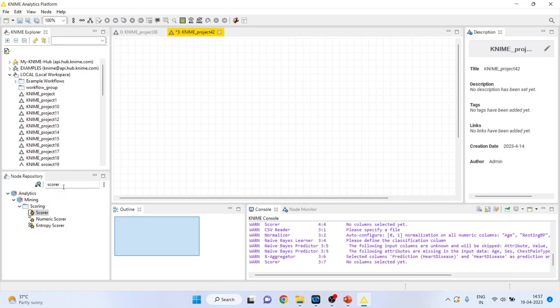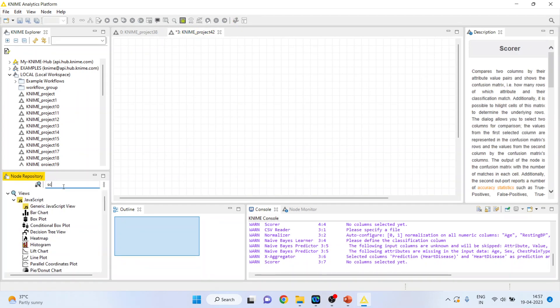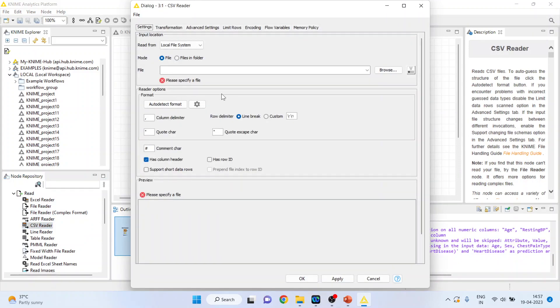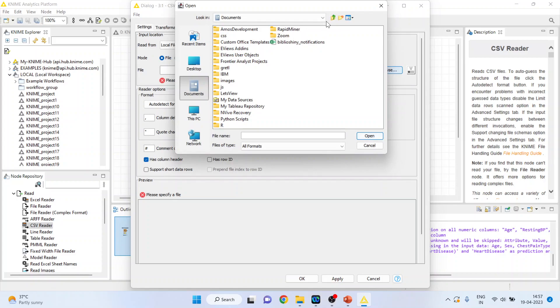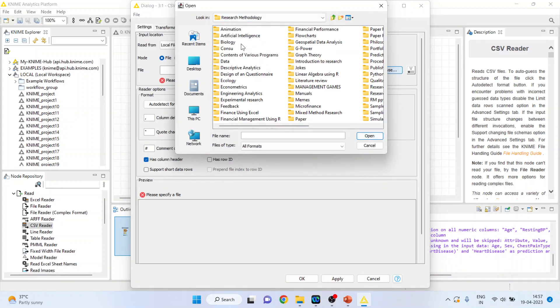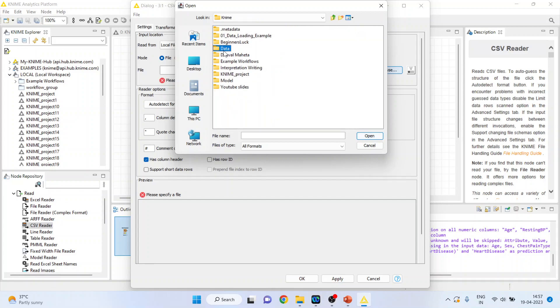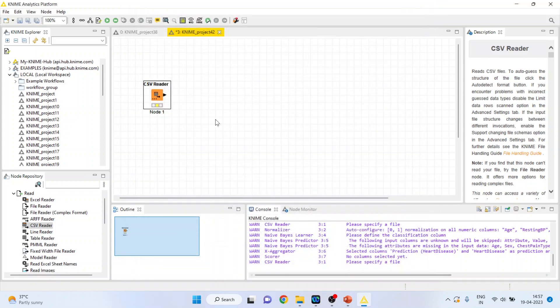So first of all, I'll activate the input output from here. I'll activate the read file, CSV reader, double click on it, browse the data set. I've activated the CSV reader node as my data file is in CSV format. Click heart1, open, ok. Right click on it and execute.